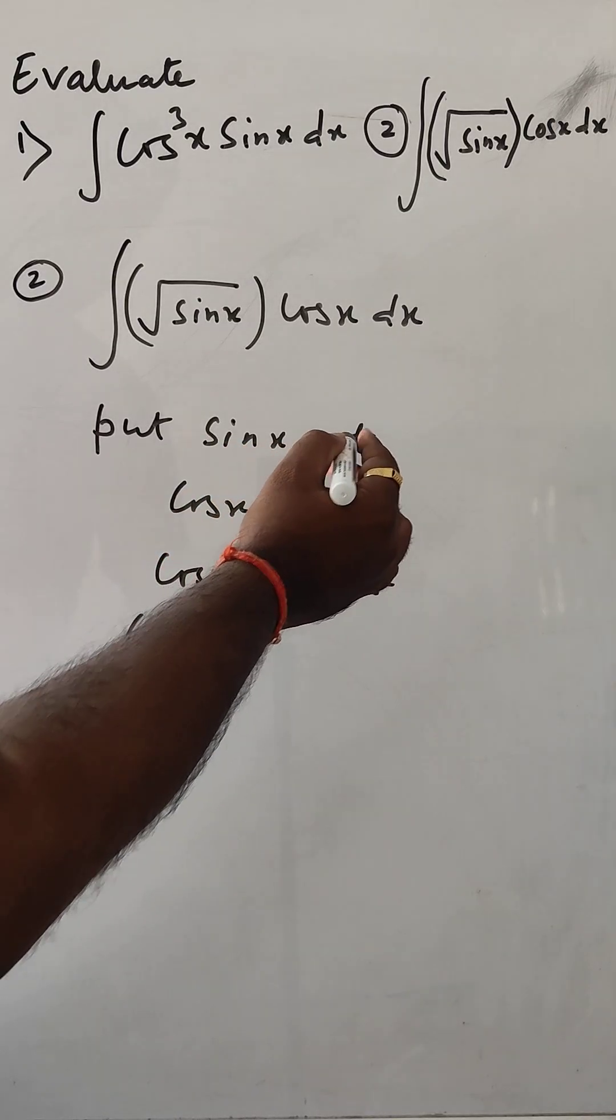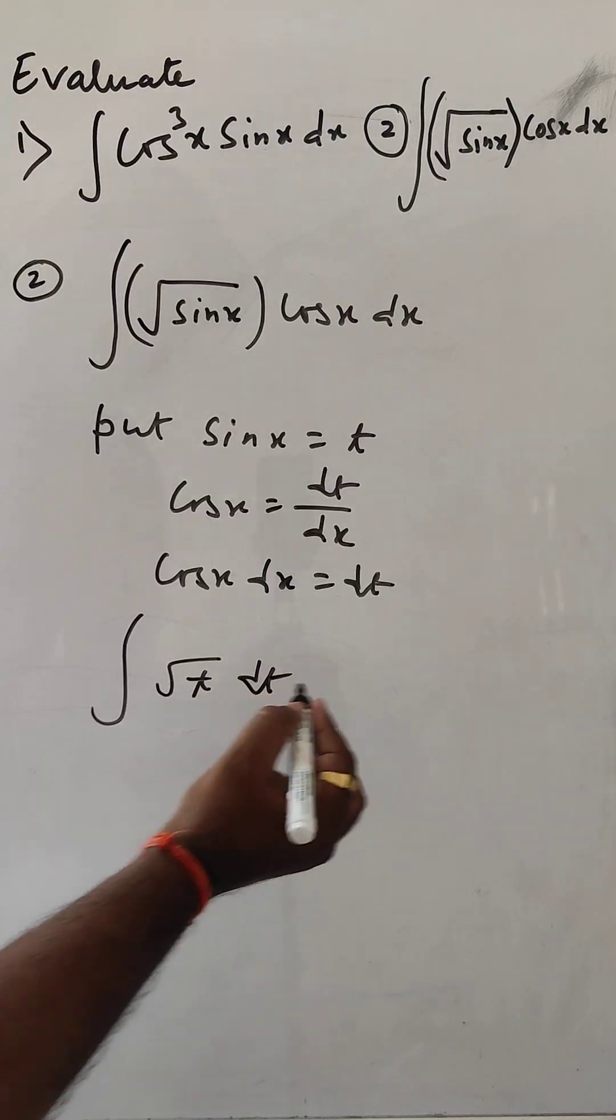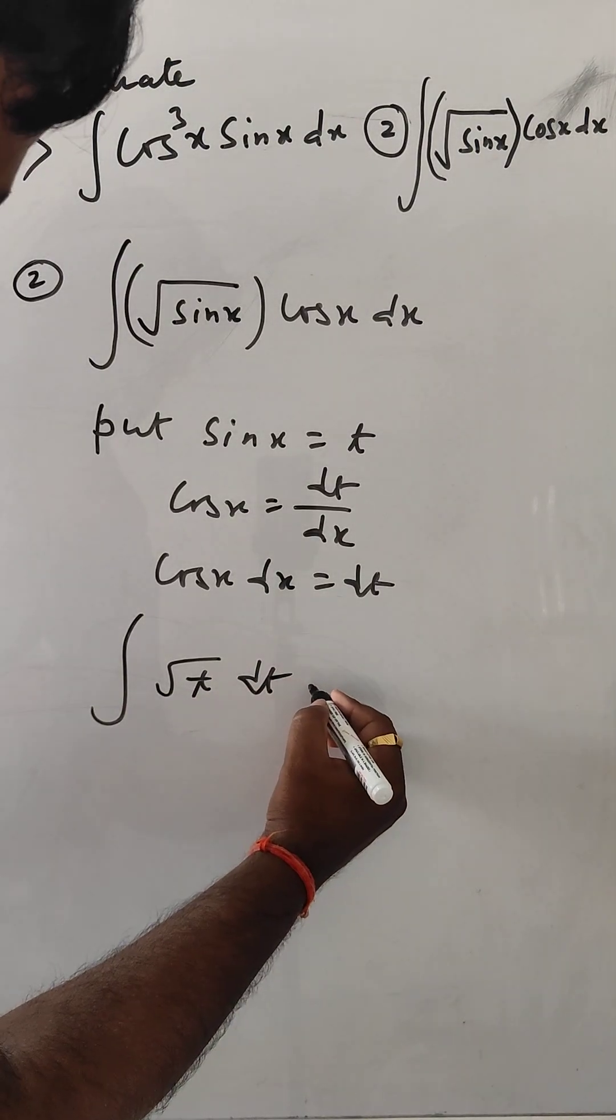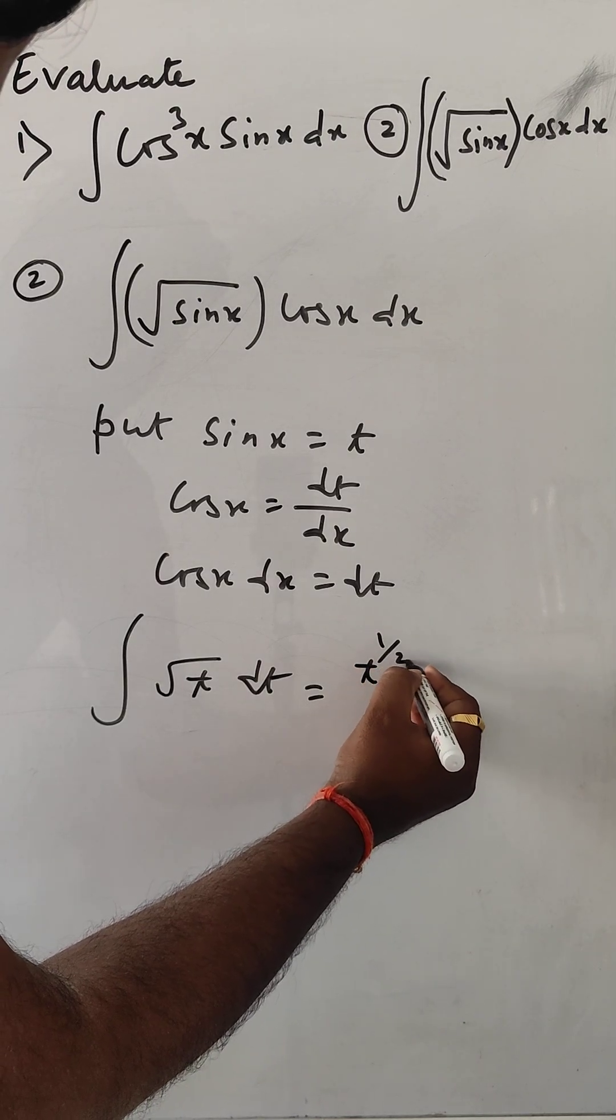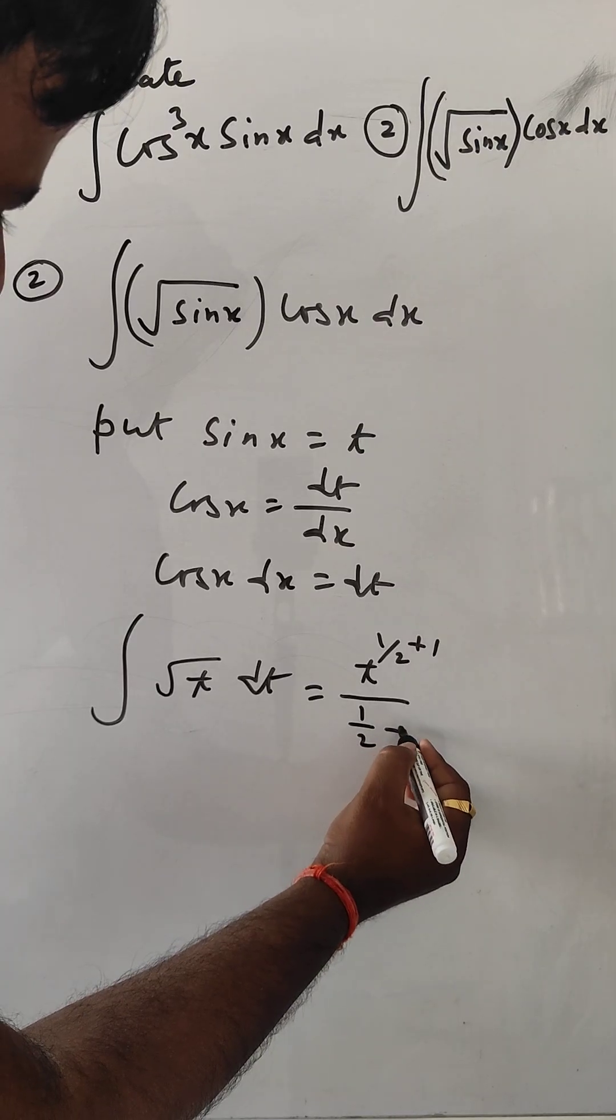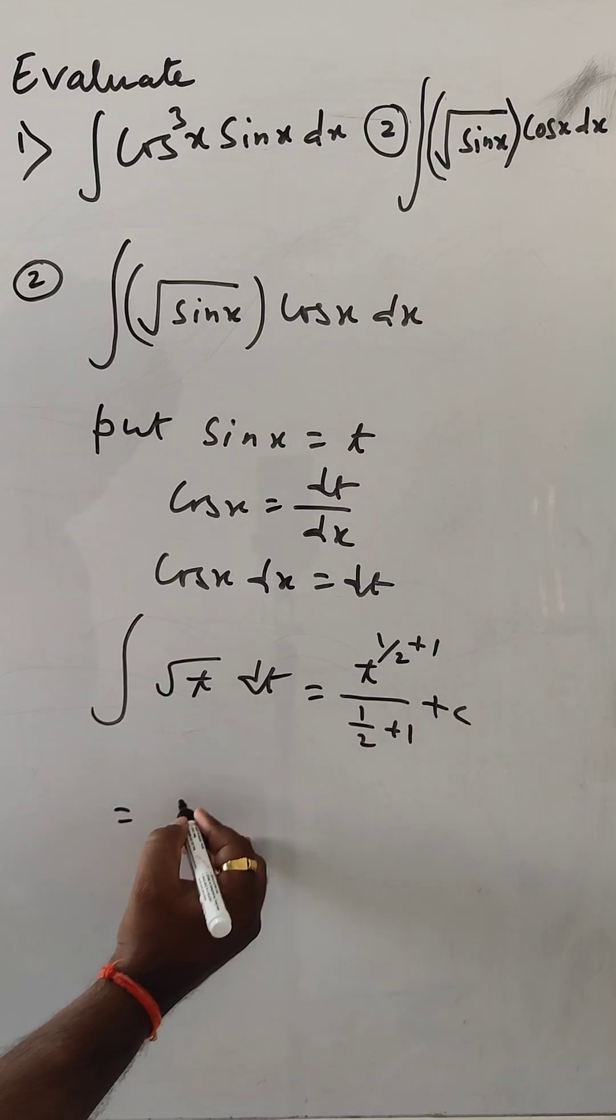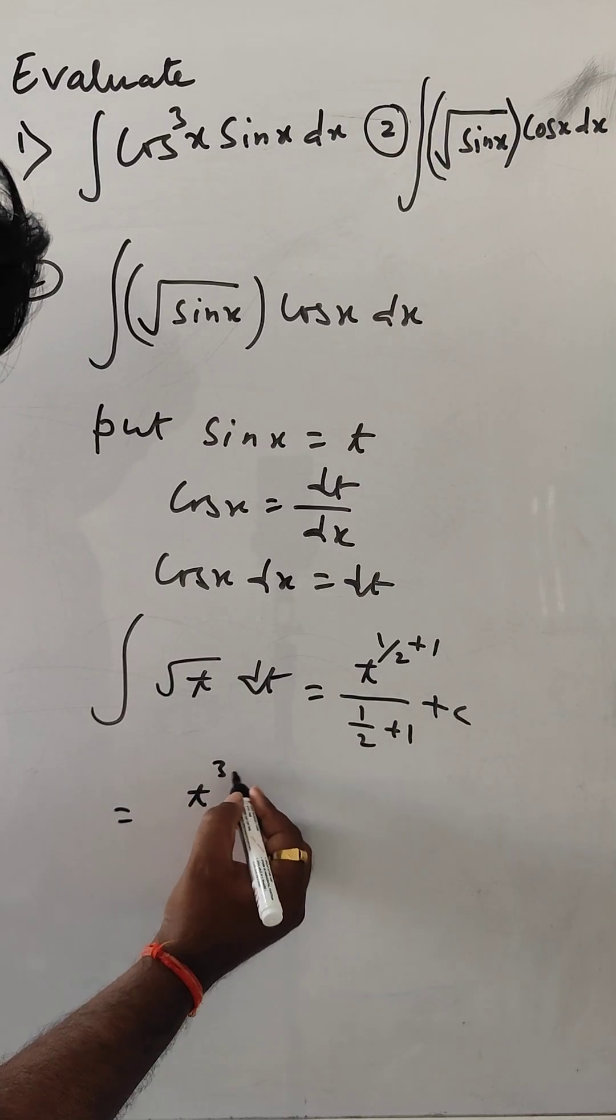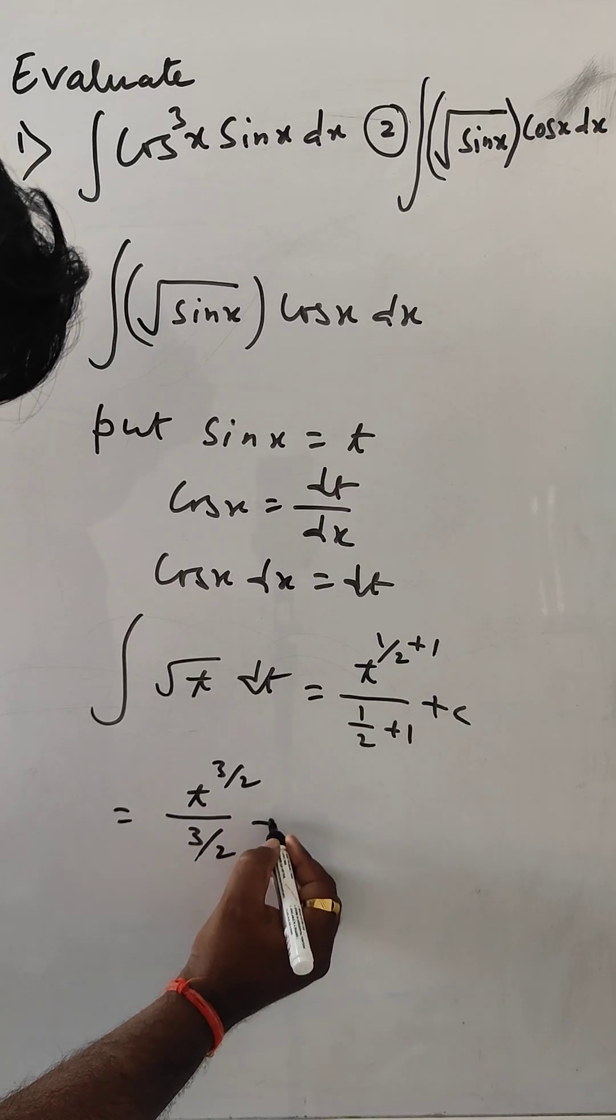For sin x, put t. It becomes square root t dt. This can be written as t^(1/2) dt. Integrating: t^(3/2) divided by (3/2) plus C.